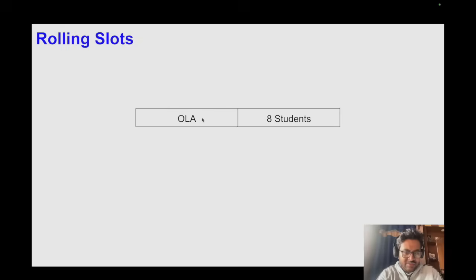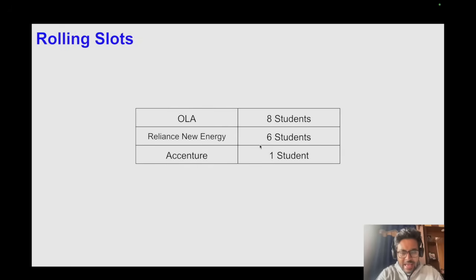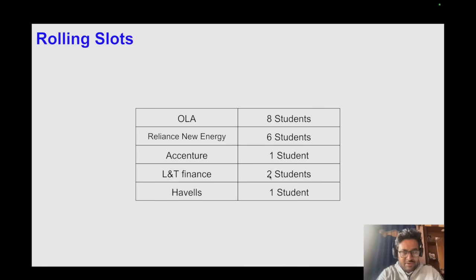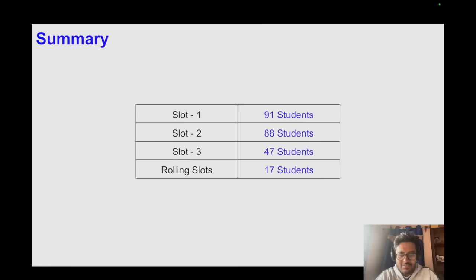From November 21st onward, rolling slots began — companies come sequentially. In this rolling round: Ola 8, Reliance New Energy 6, Accenture 1, L&T Finance 2, and Hubbles 1. To summarize: Slot 1 had 91 students placed, Slot 2 had 88 students, Slot 3 had 47 students, and the rolling slots so far have 17 students — a total of 243 students placed across all departments.